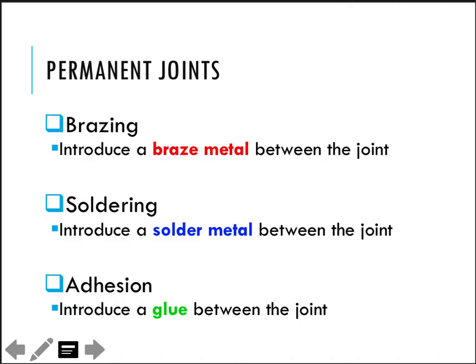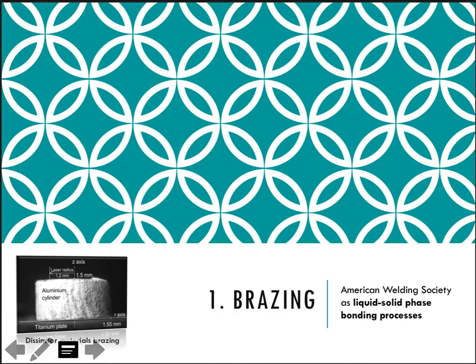Brazing introduces a braze metal, soldering introduces a solder metal, and adhesive bonding introduces a glue or polymeric material. Brazing and soldering are attractive compared to welding in circumstances where metals have poor weldability, when dissimilar materials need to be joined, when intense heat would damage the parts, when geometry is very complex such as internal surfaces, and when high strength is not a requirement.